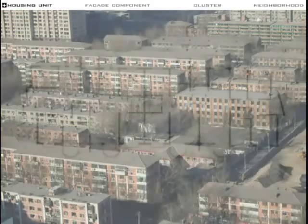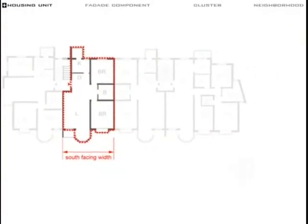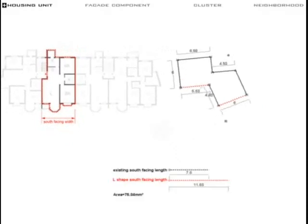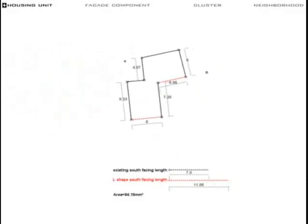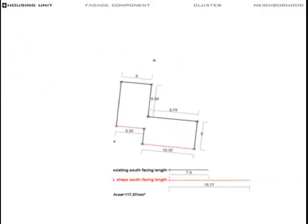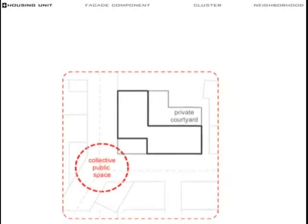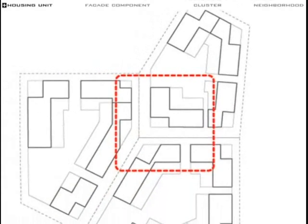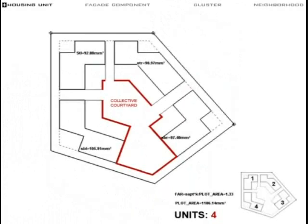Referencing the Chinese living culture and climatic performance, the North-South typology is the most popular one in the market. This geometric model provides longer self-facing width and natural ventilation from different orientations, trying to overcome the existing rectangular model. The inner corner of the L-shape can be the private courtyard, while the outer corner becomes part of the shared collective space.